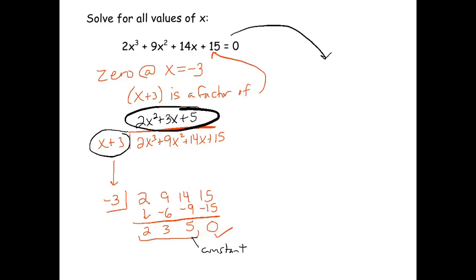So I'm going to take this. I'm going to rewrite it as x plus 3 times 2x squared plus 3x plus 5 equals 0. Excellent. So now we have a factored equation. Oh, we already knew this answer was x equals negative 3. There's one of our answers that we already knew.